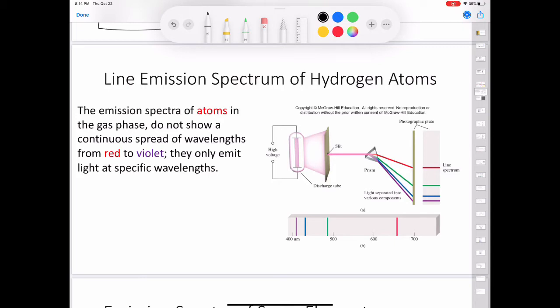Rather, the atoms produce bright lines in different parts of the visible spectrum. These line spectra are the light emission only at specific wavelengths. This figure is a schematic diagram of a discharge tube that is used to study emission spectra. This figure shows the color emitted by hydrogen atoms in a discharge tube. The gas under study is in a discharge tube containing two electrodes.